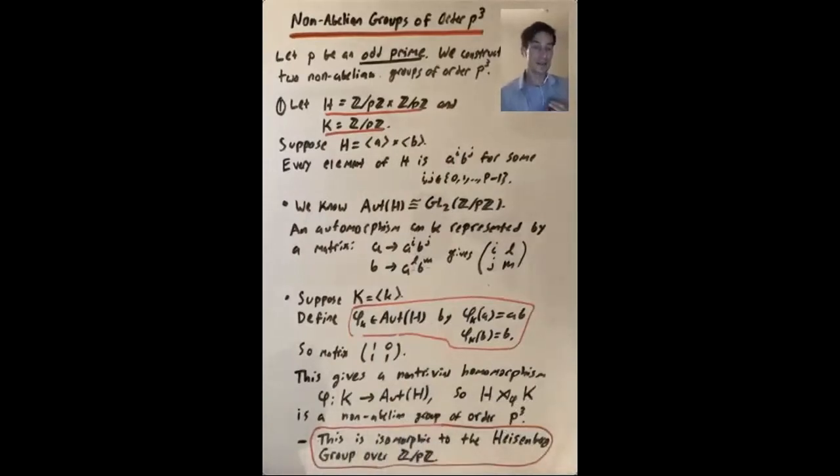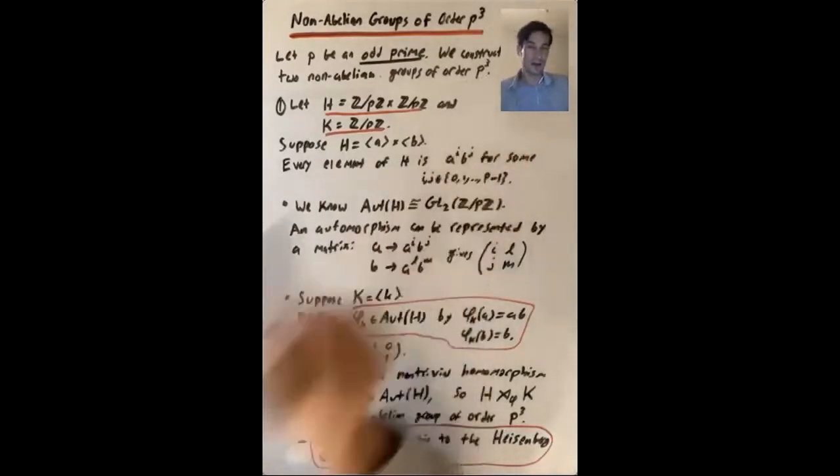And it turns out that this group is isomorphic to the Heisenberg group over Z mod pZ. This example that we've already encountered a bunch of times in homework exercises and in lecture. So we'll see more of the details of exactly how that works in the homework.